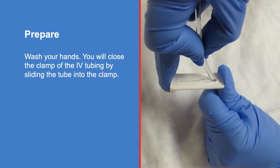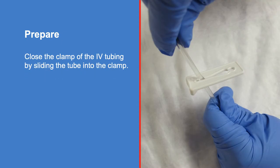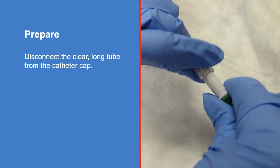Wash your hands with soap and water and put on both pairs of gloves, one on top of the other. Then you will close the clamp of the IV tubing by sliding the tube into the clamp.